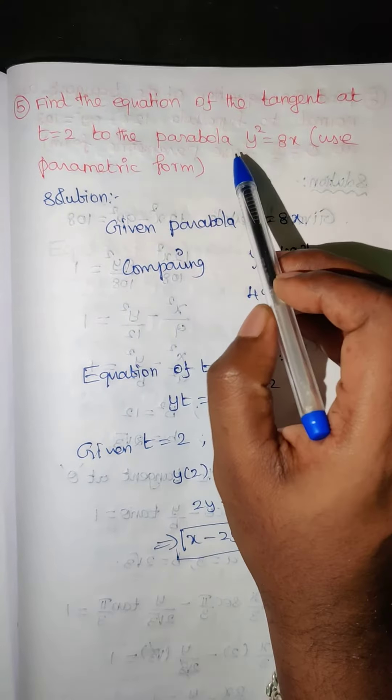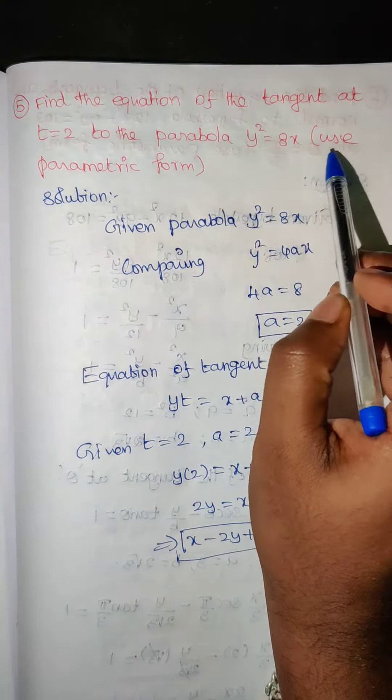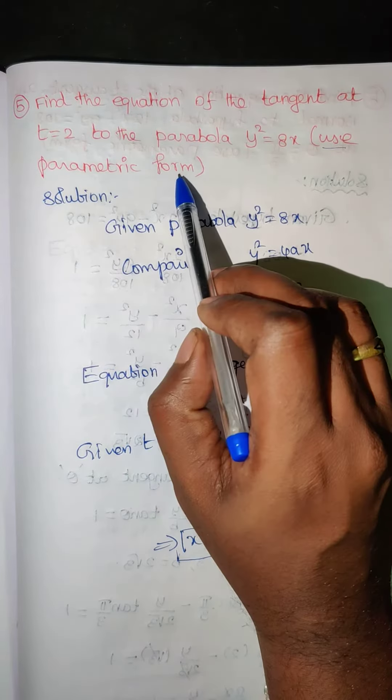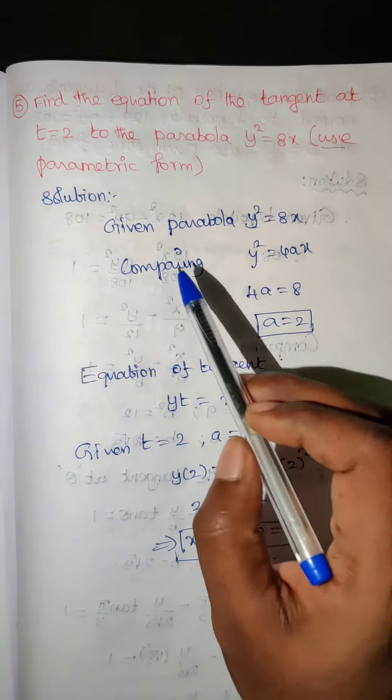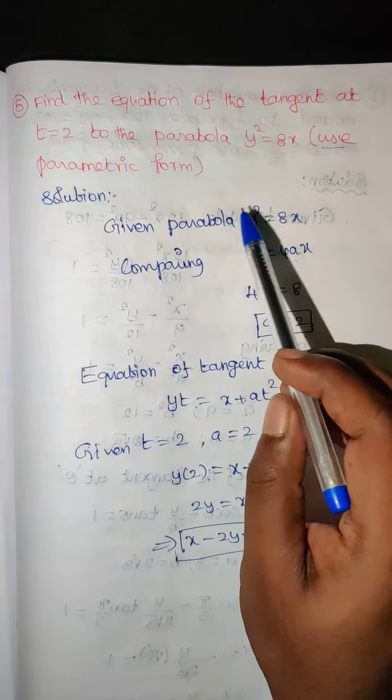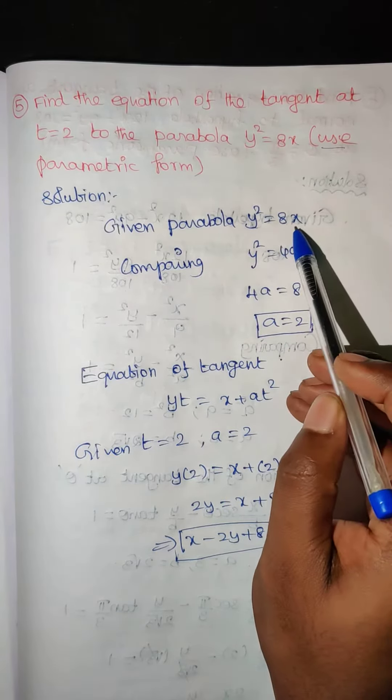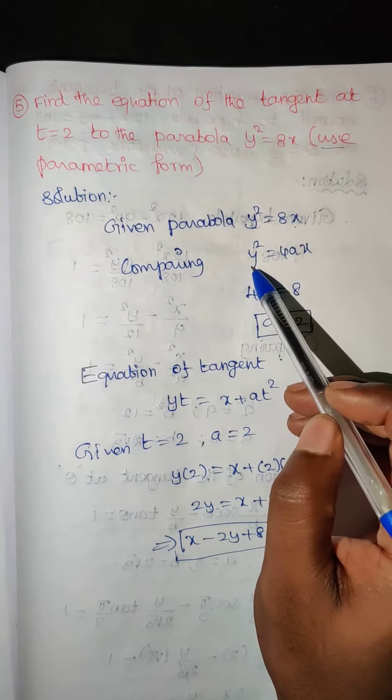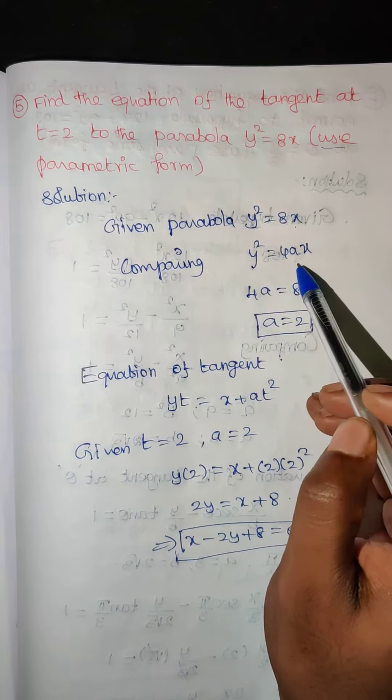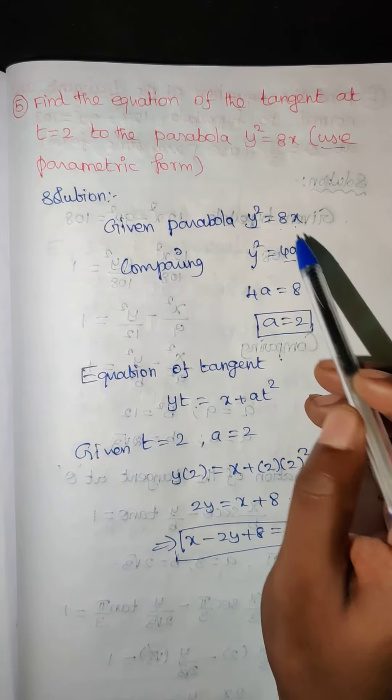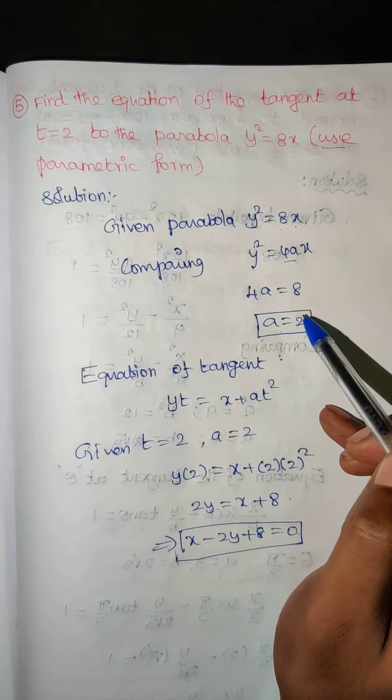Use parametric form. So the given parabola is y squared equal to 8x. I am going to compare this to the general equation of parabola y squared equal to 4ax. So 4a is equal to 8 and a equal to 2. So we know the a value.